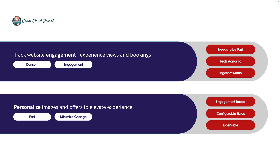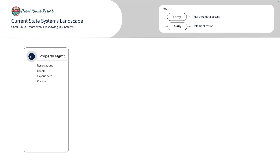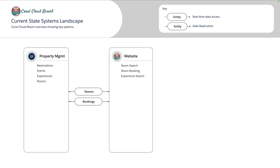Let's take a look at their existing systems landscape to see what applications we have to work with. A third-party property management system takes care of room availability and experiences for each hotel around the world, and that data feeds their website, which provides the capability to search for rooms, the experiences at each resort, and to ultimately make a booking. The issue is that the interactions a potential guest has on the website are not captured currently, meaning Coral Cloud don't have the ability to dive into what hotel assets are most popular. The marketing team have been tasked with building a profile for guests that opt in for a more personalized experience based on what they're actually clicking on the website.